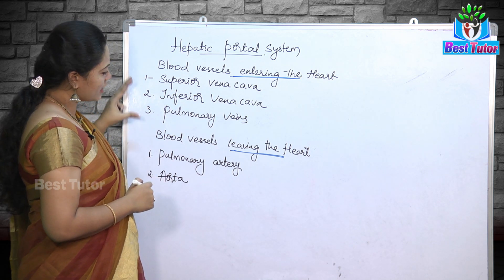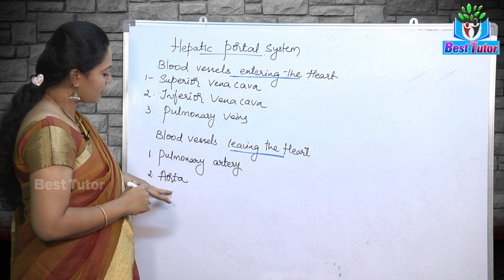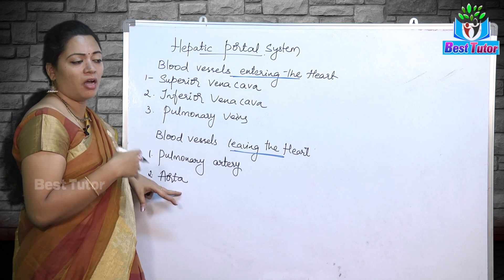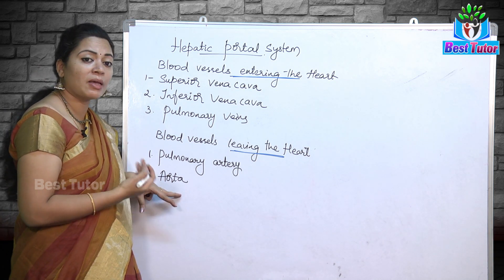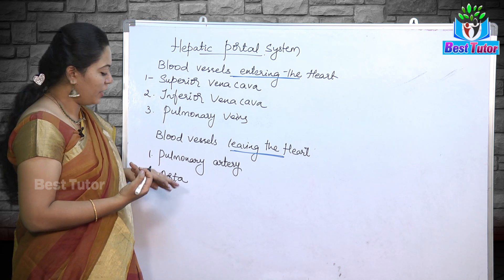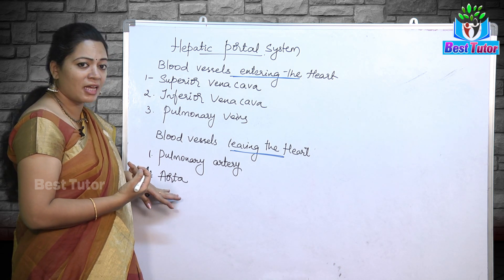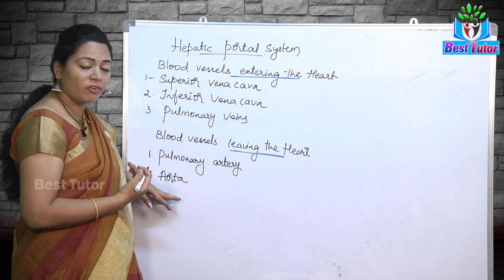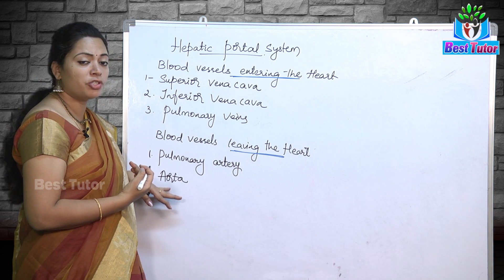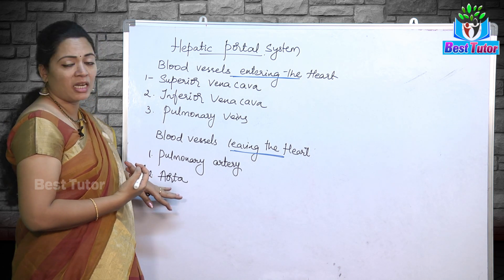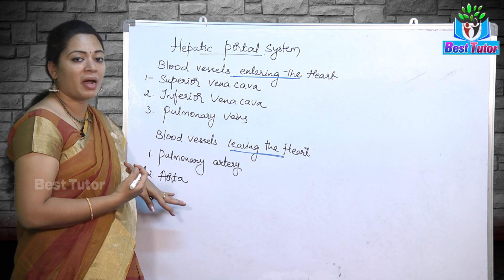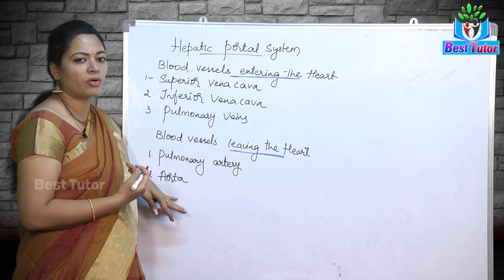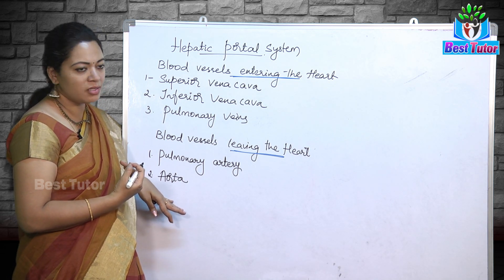Now, after understanding this, it is time to understand how this aorta is supplying blood to different parts of our body. We know it is the largest blood vessel coming out of the heart. This further branches into different blood vessels which carry blood to different parts of the body. Out of this, I am going to discuss only a few important blood vessels.